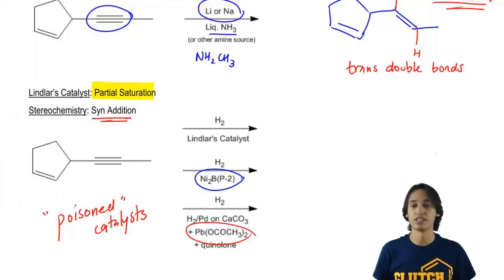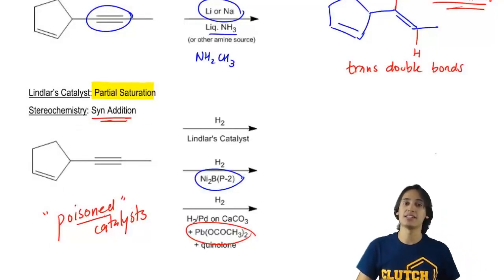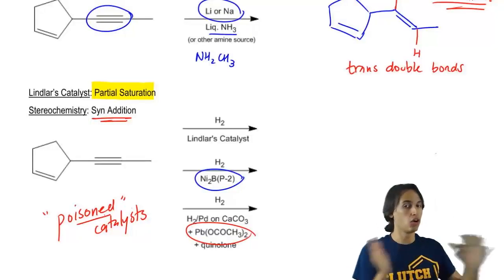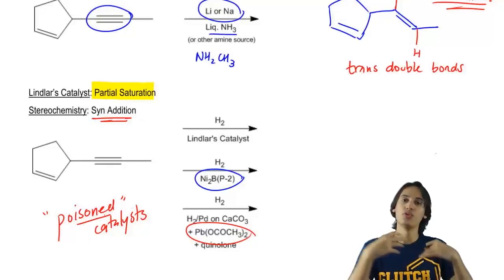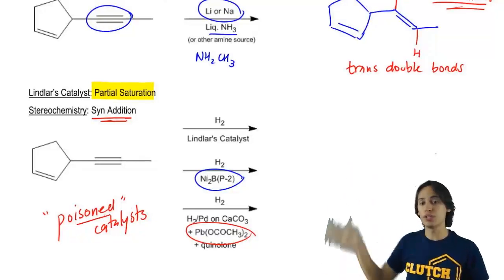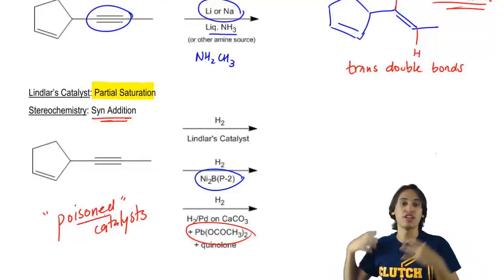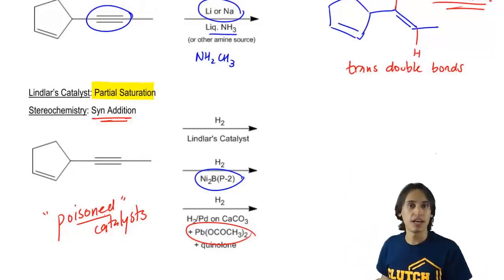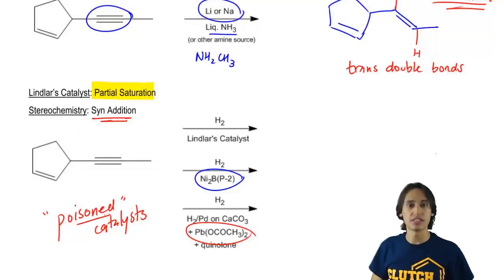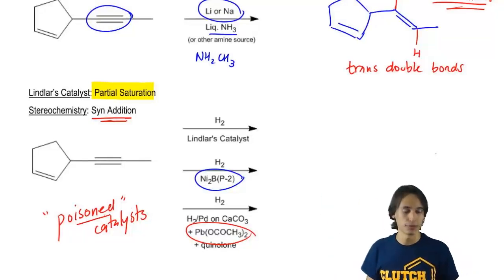So poisoned catalysts. What does poisoned mean? What it means is that these catalysts have been created in such a way that they're not going to reduce all the way or they're not going to hydrogenate all the way. Instead they're going to stop at a given point. And that's why they're called poisoned. So these are three different ways that you could see this reagent. Just be aware of them. Personally, I hope that your professor just writes Lindlar's, but you may see these other two reagents come up.